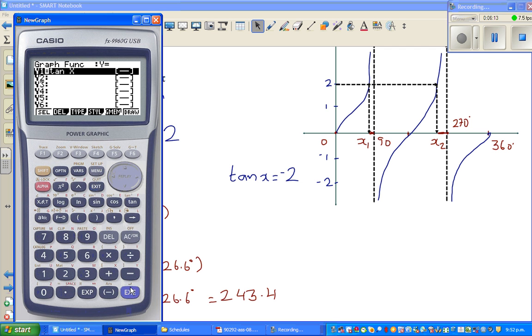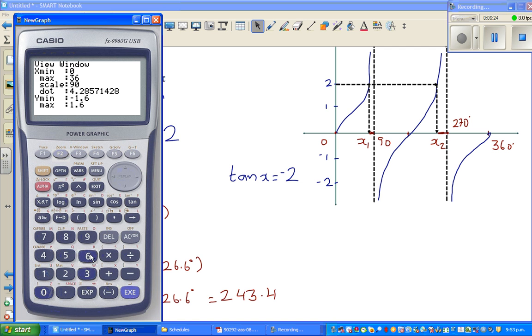So let us graph this. Go to graph, let me delete it and again type in tan x. I should change degrees, so 0 to 360, and I'll change this to minus 3 to 3 because I want to go up to 2, and then draw it.